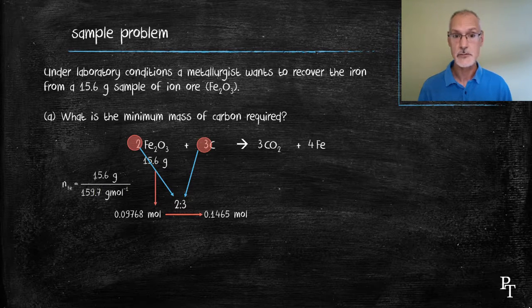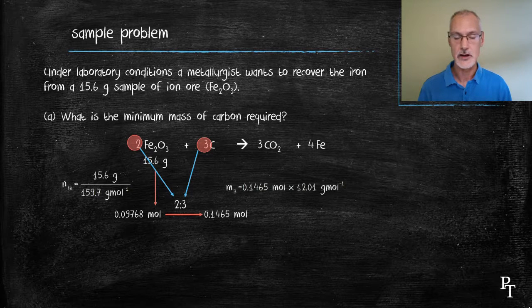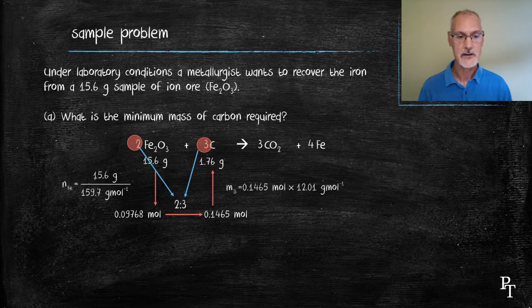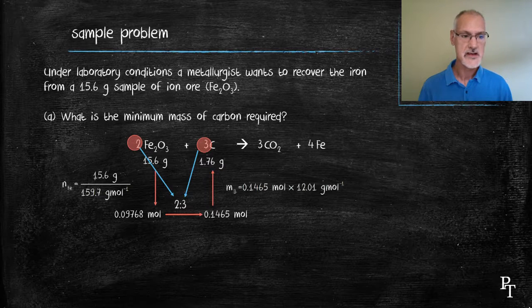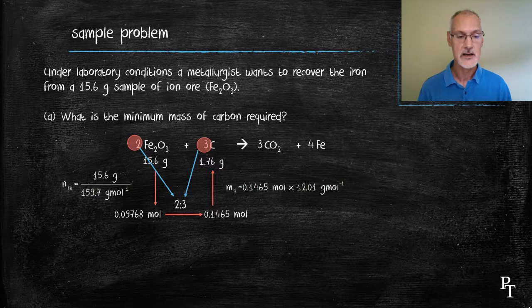My next step is to convert the moles of carbon using the molar mass of carbon into grams. So I multiply it. And I arrive at 1.76 grams of carbon. Notice I have 3 significant digits in my final answer. That's because my given starting information had 3. But I did carry one more decimal than was needed in my calculations of the moles. But I did round off at the end to the appropriate number.